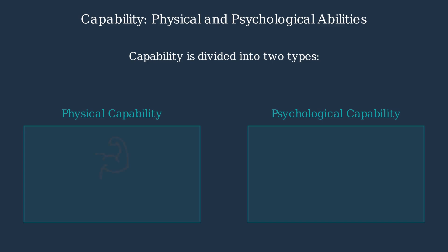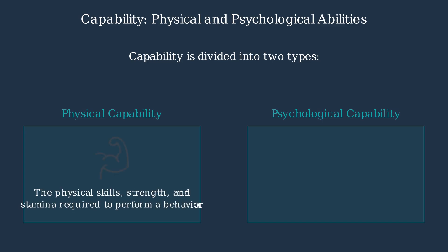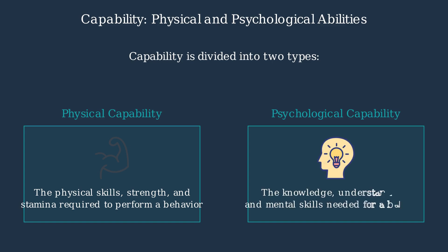Physical capability refers to the physical skills, strength, and stamina required to perform a behavior. Psychological capability includes the knowledge, understanding, and mental skills needed for a behavior.